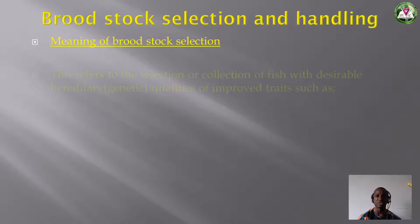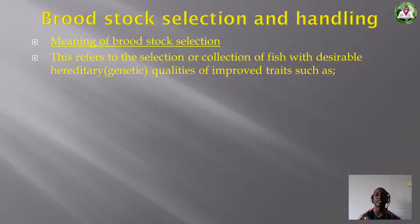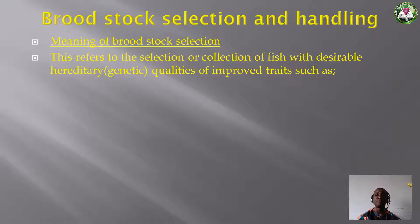Meaning of broodstock selection: broodstock selection refers to the selection or collection of fish with desirable hereditary or genetic qualities of improved traits. It refers to the selection or collection of fish that have the traits you like — desirable hereditary characters.